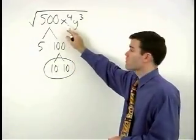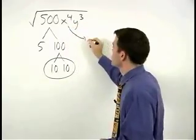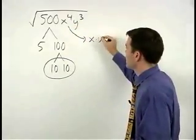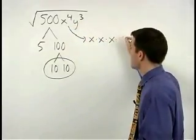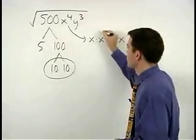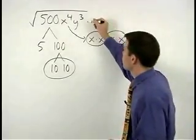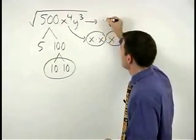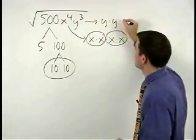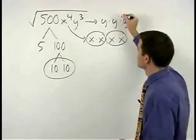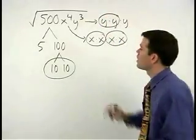Think of x to the fourth as x times x times x times x. So we have two pairs of x's. And think of y to the third as y times y times y. So we have one pair of y's.